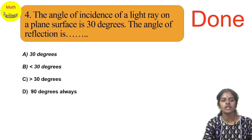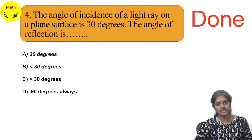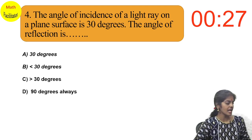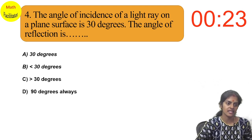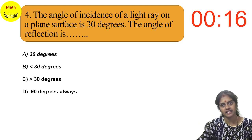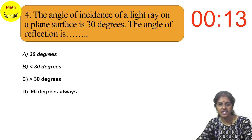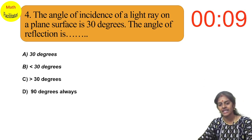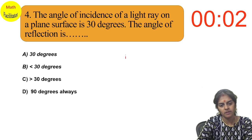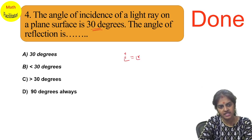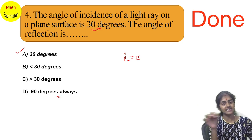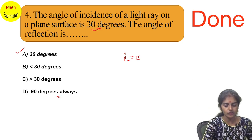The angle of incidence of a light ray on a plane surface is 30 degrees — what is the angle of reflection? This is very similar to the first question. Is it 30 degrees, less than 30, greater than 30, or 90 degrees? The angle of incidence equals the angle of reflection, so if the angle of incidence is 30, the angle of reflection is also 30 degrees.